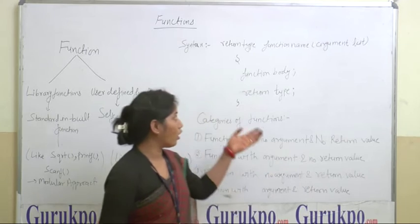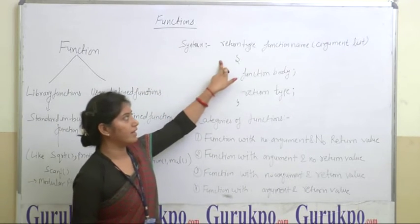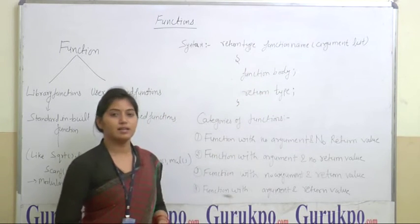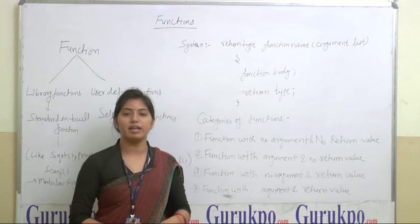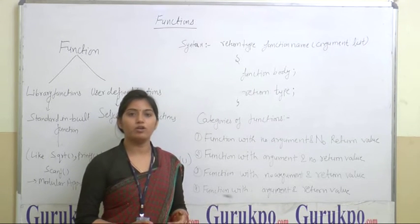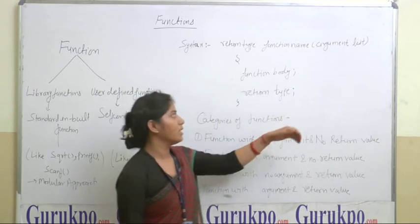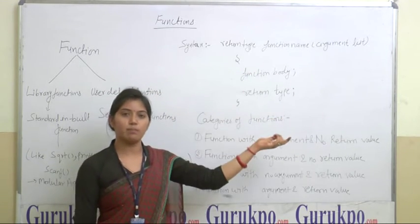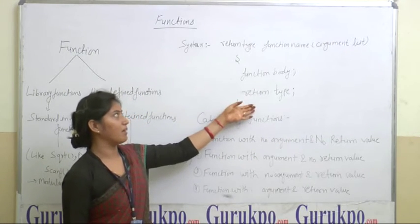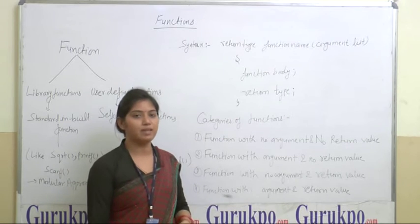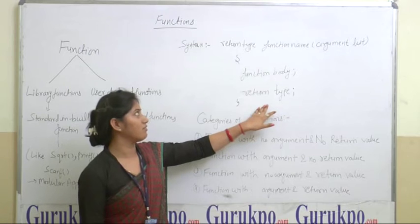If we talk about the syntax, the syntax of a function is written as: return type, function name, and argument list. The return type is the type returned by the function — if it returns an integer or float value, that is the return type. The function name and arguments passed to the function can be actual parameters and formal parameters. Then there is the function body and the return type.